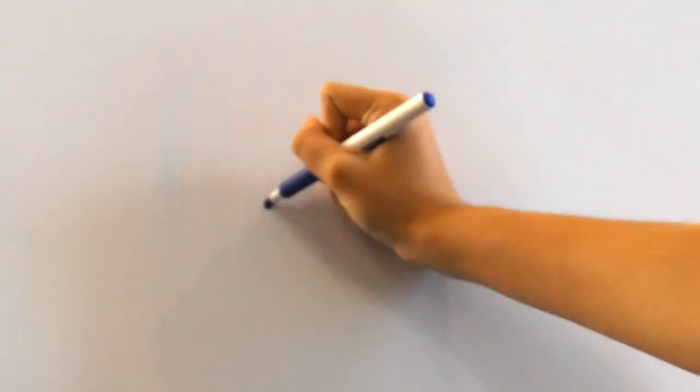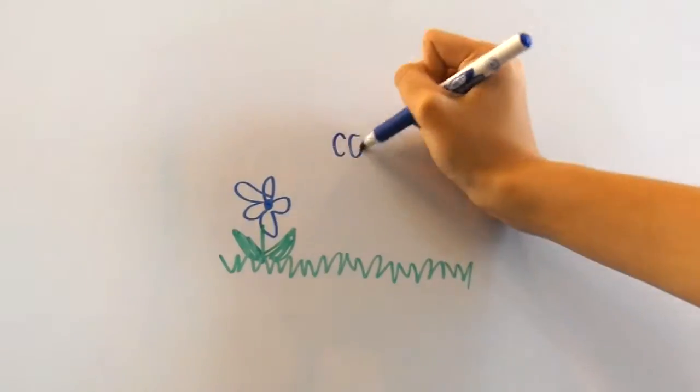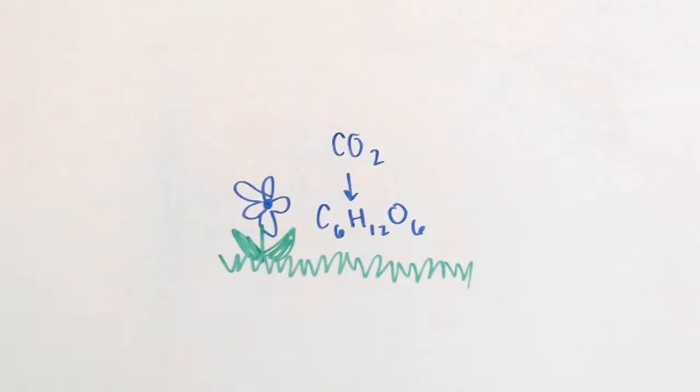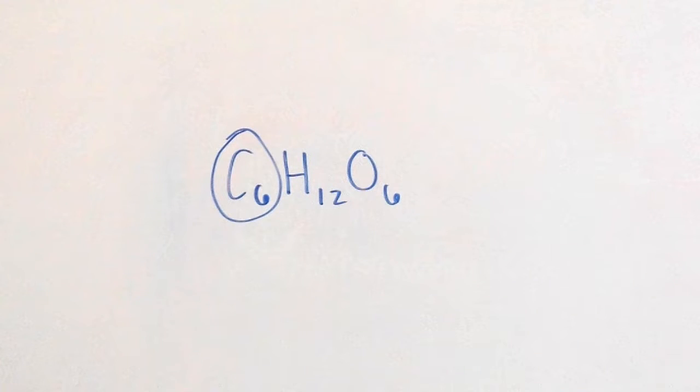Photosynthetic organisms like plants then use the CO2 from the atmosphere during photosynthesis to convert into sugars such as glucose. That's why we see carbon as an element found in sugars, C6H12O6.